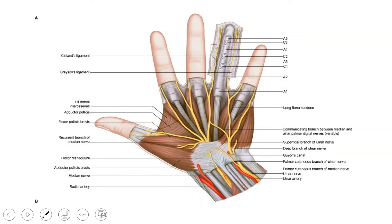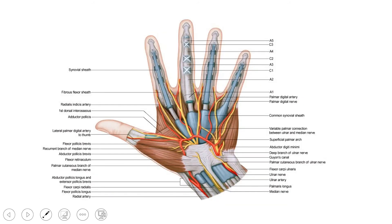In this picture we can visualize the nerves beneath the palmar aponeurosis, mainly the superficial branches of the ulnar nerve and the branches of the median nerve. In another picture we can see the superficial palmar arch immediately deep to the palmar aponeurosis, along with its digital branches.